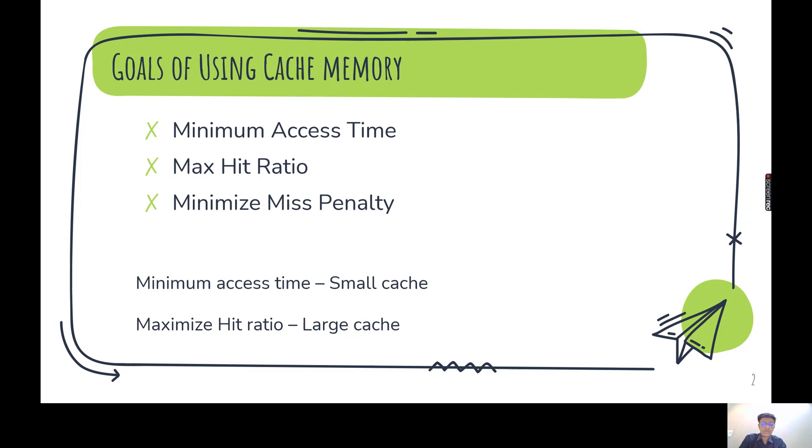The hit ratio - how many times that CPU accesses the memory. Suppose CPU accesses cache memory for 100 times and out of 100 times, 90 times the data is found in that cache memory and 10 times the data is not in the cache memory, but rather it is in the main memory. So the hit ratio is 0.9 according to 90 by 100. 90 times the data is in cache memory. So that is a hit ratio.